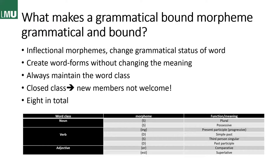So let's quickly go through the morphemes. We have the plural -s, the possessive -s, -ing to form the present participle or progressive forms of verbs, then the simple past marker -ed, then the third person singular -s, and the past participle marker, which looks the same as the simple past marker. Then we have -er for comparative forms of adjectives, and -est for superlative forms of adjectives.